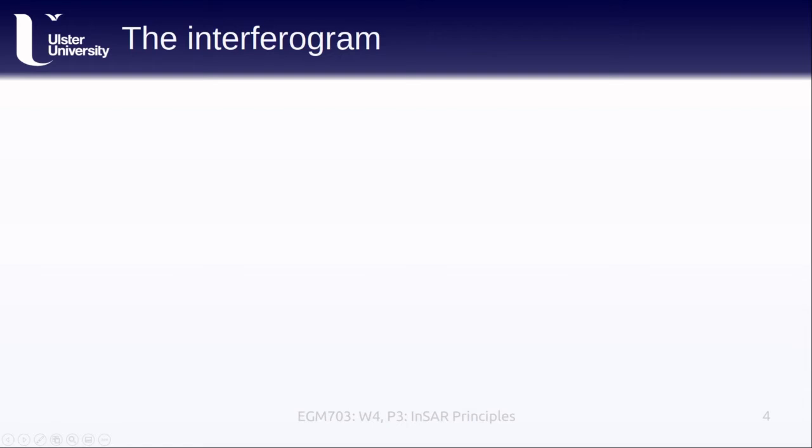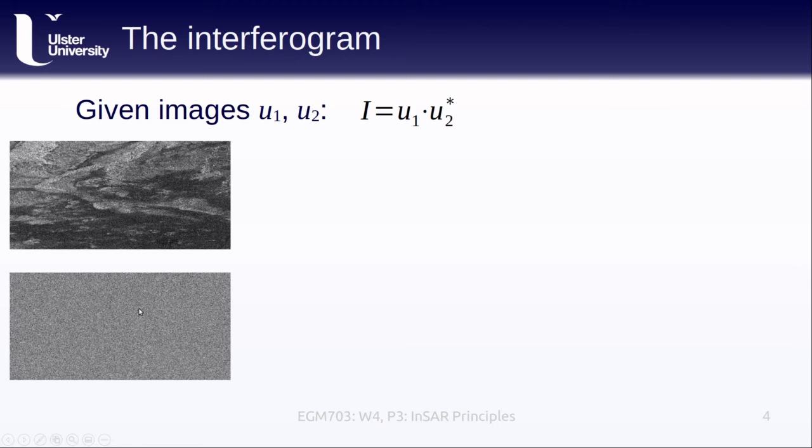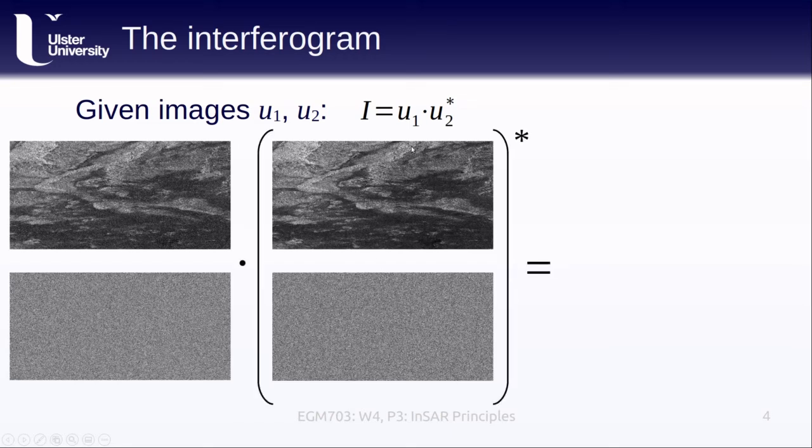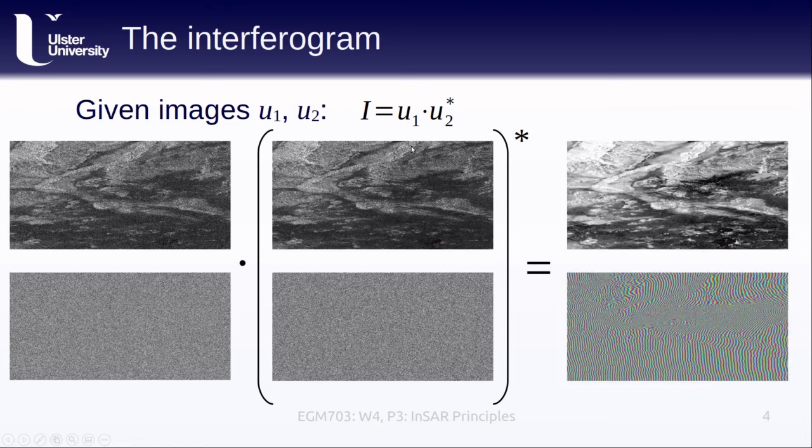So if we have two images, u1 and u2, the way that we form the interferogram is by taking the dot product of image 1 with the complex conjugate of image 2. So given image 1 which has an amplitude and phase that looks like this, and image 2 which has an amplitude and phase that looks like this, if we actually do this multiplication, what we end up with is this.